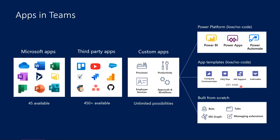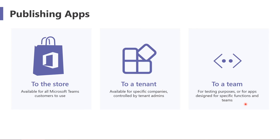There are about 20 templates published in GitHub today. You can experiment — these are also low-code, no-code type solutions. Or you could build an application from scratch using bots, tabs, and message extensions. You can use Microsoft Graph, identity framework, and build all sorts of applications required in your line of business. An application can be published to the store — organizations developing applications for customers could publish to the Microsoft store and all customers can take advantage of it. You could write an application just for your tenant, publish it for your organization, or publish it to a specific team for testing or for a specific group of users.